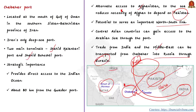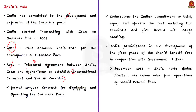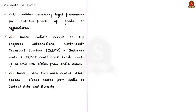Because of its strategic importance, India has committed to the development and expansion of this port. In 2015, India and Iran signed an MOU for the development of Chabahar Port. In 2016, this MOU translated into a trilateral agreement with Afghanistan also joining to establish an international transport and transit corridor. India participated in the development of the first phase of Shahid Behesti Port, and by 2018 an Indian company had taken over the port operations. Consequently, India also gained benefits like boosting access to the proposed International North-South Transport Corridor (INSTC).